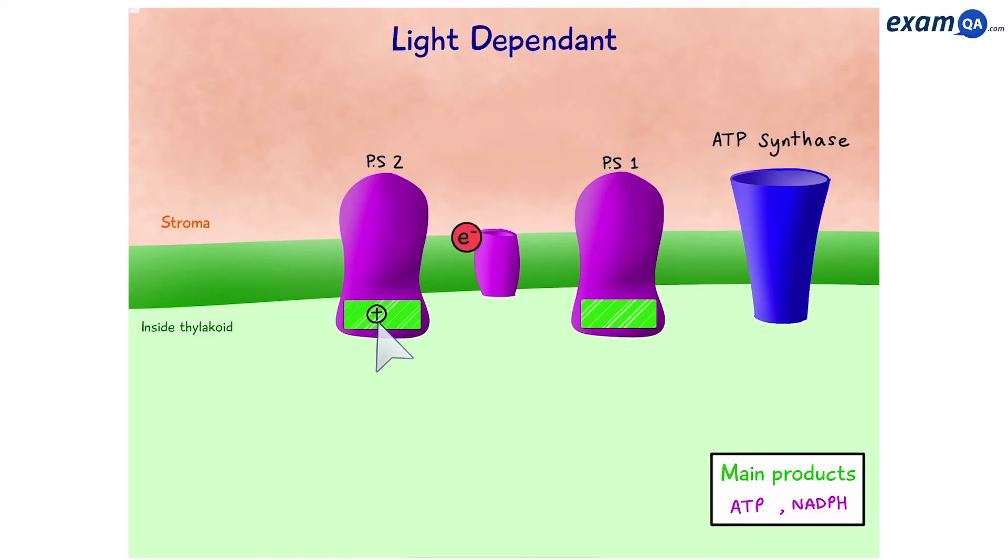Next, the electron moves to the electron carrier. The carrier uses the energy that the electron has to pump hydrogen ions from the stroma into the thylakoid. Now that we have a high concentration of hydrogen ions inside the thylakoid, they're going to try to diffuse back out down their concentration gradient. However, because they're ions, they're going to need an ion channel.